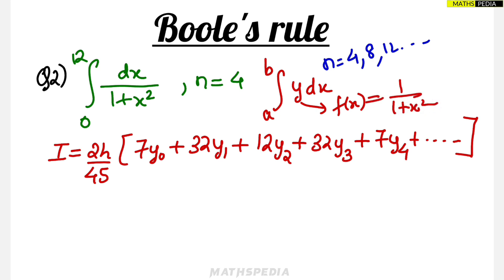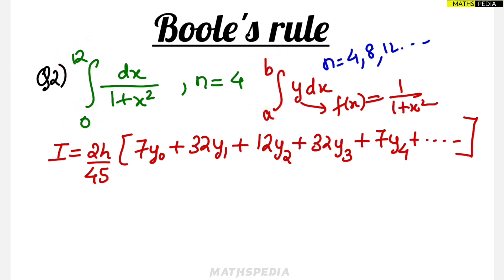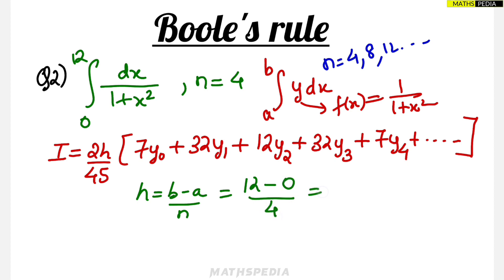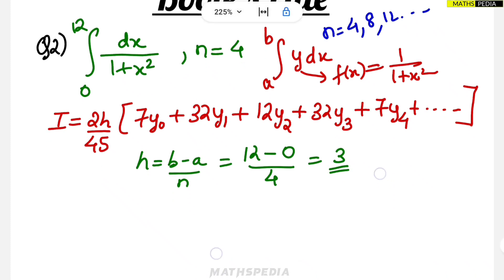The a value is the lower limit and the b value is the upper limit, and we know both. We now need to find the h value. The h value is given by (b − a)/n, where b is the upper limit which is 12, a is the lower limit which is 0, and n is 4. So h = 12/4 = 3. The h value, or width, is 3.